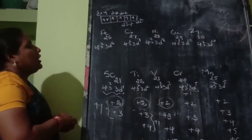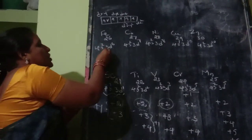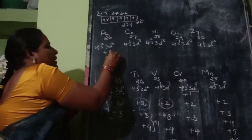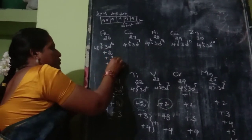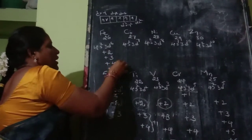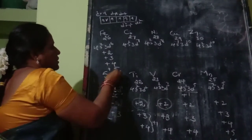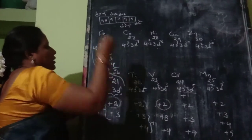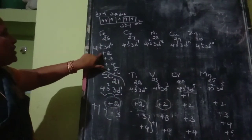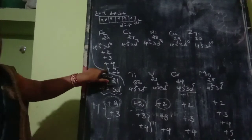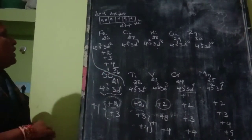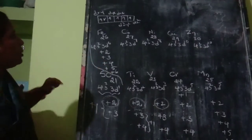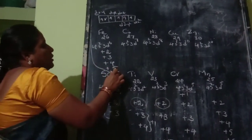Based on this configuration, the number of oxidation states for iron are: +2, +3, +4, +5, and +6. Iron has 6 electrons in total. From the 4S2 shell, 2 electrons are lost first.